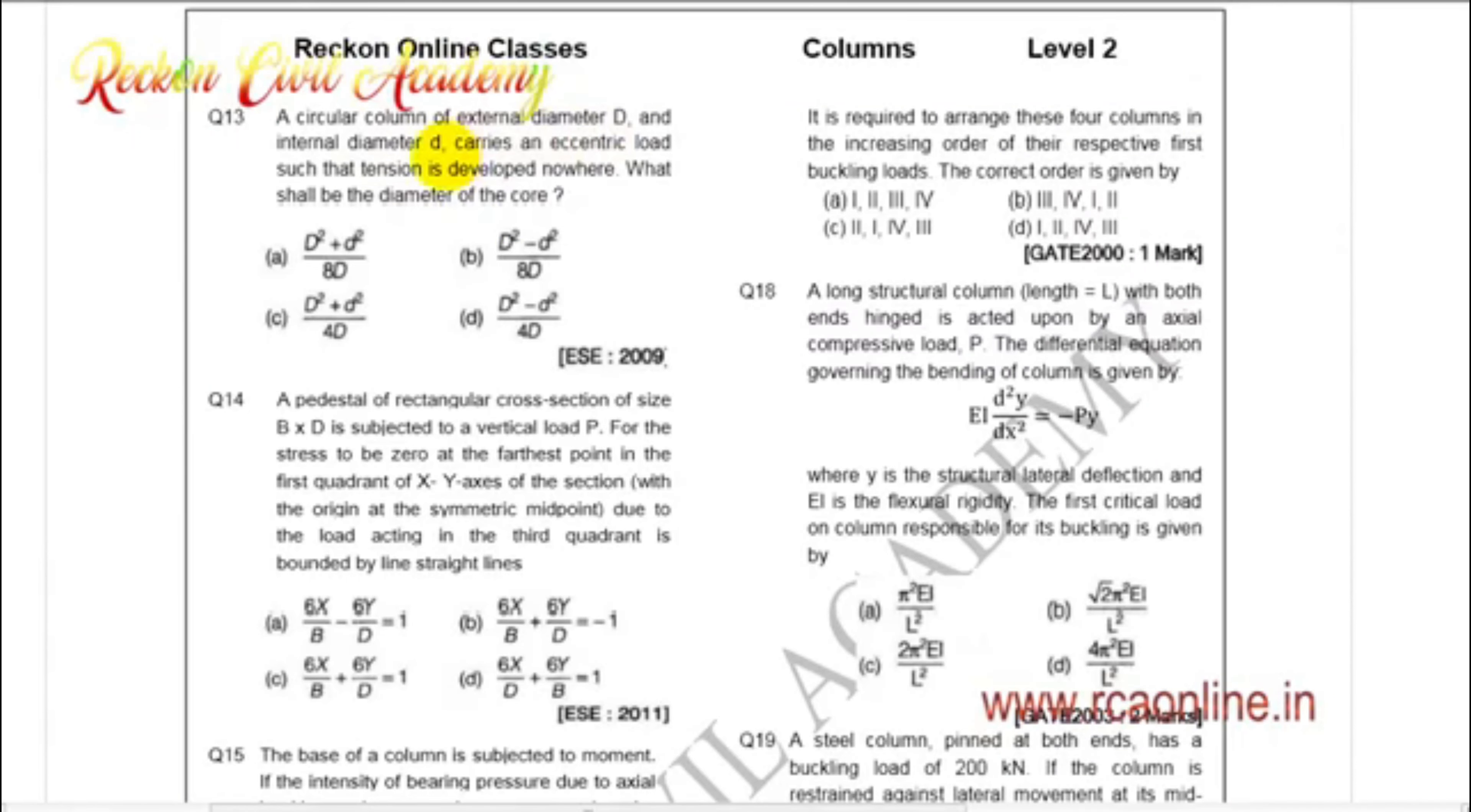A circular column of external diameter D and internal diameter D carries an eccentric load such that tension is developed nowhere. What shall be the diameter of the core?